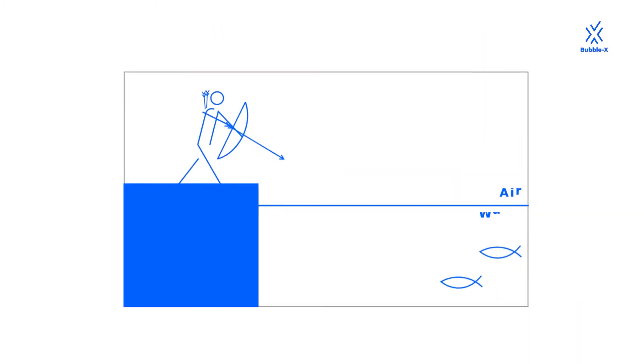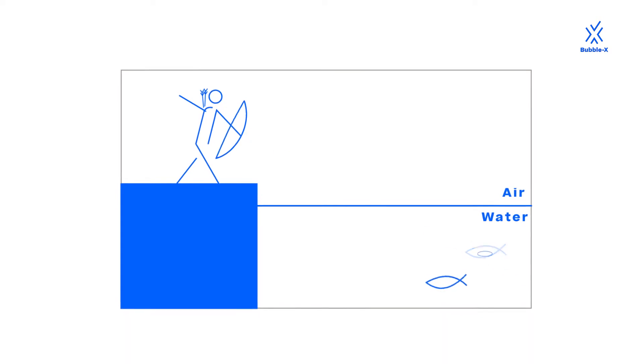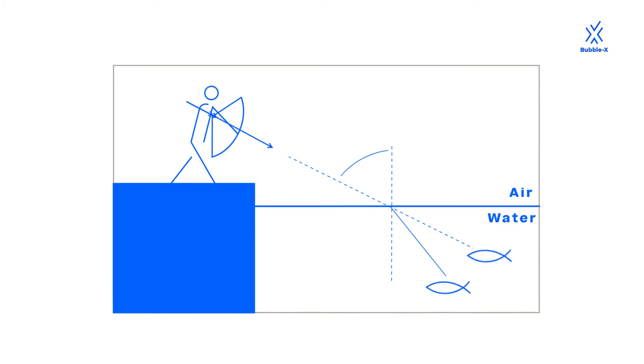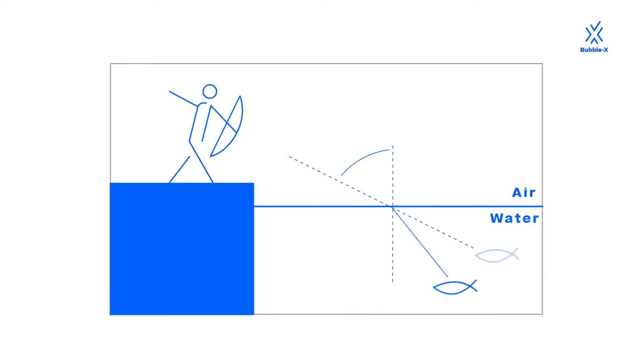Bubble X therefore uses the refraction of light. A well-known example of this effect: objects in the water appear to be shifted from their actual position.